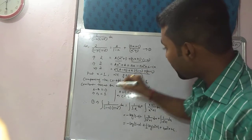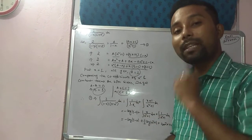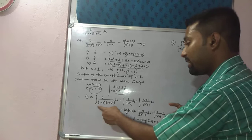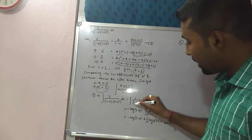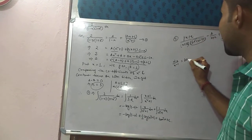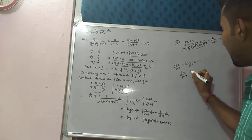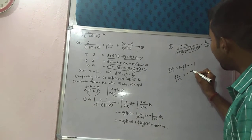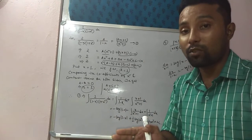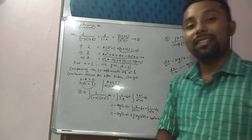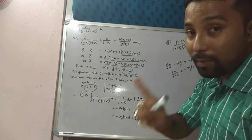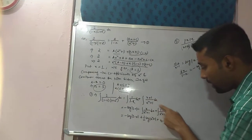Now we know all the values — a, b, and c are all equal to 1. Put the values of a, b, and c in equation number 1, then take integration on both sides. So I have taken integration on both sides. For 1 by (1 minus x): integration of dx by (x minus 1) is log modulus (x minus 1), but for dx by (1 minus x), since the variable has a minus sign in front, you put a minus sign before the logarithm — giving minus log modulus (1 minus x).